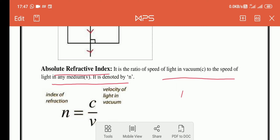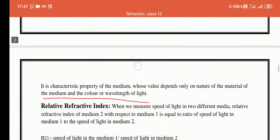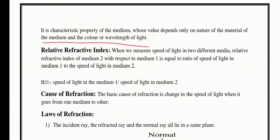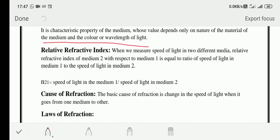In the absolute refractive index formula you write c divided by v, but if instead of air there is another medium as the first medium, you can't write c — you write something else. This is the case of relative refractive index, where we have two different media with different refractive indices. The difference is: in absolute refractive index the first medium is air; in relative refractive index both media are different from each other.